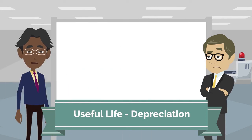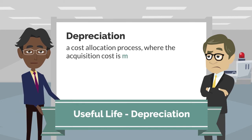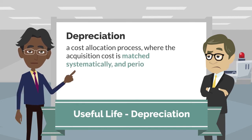So how does this impact the company's accounting for the asset? Well, we use an accounting method called depreciation to represent this reduction. It is a cost allocation process where the acquisition cost is matched systematically and periodically to the period's benefits by their use.